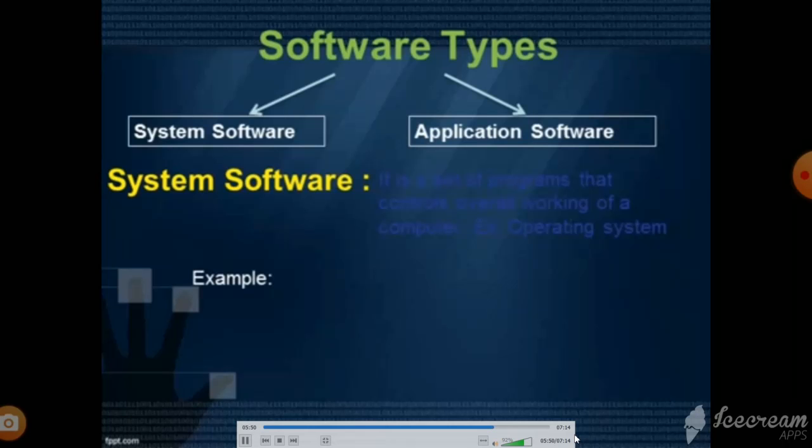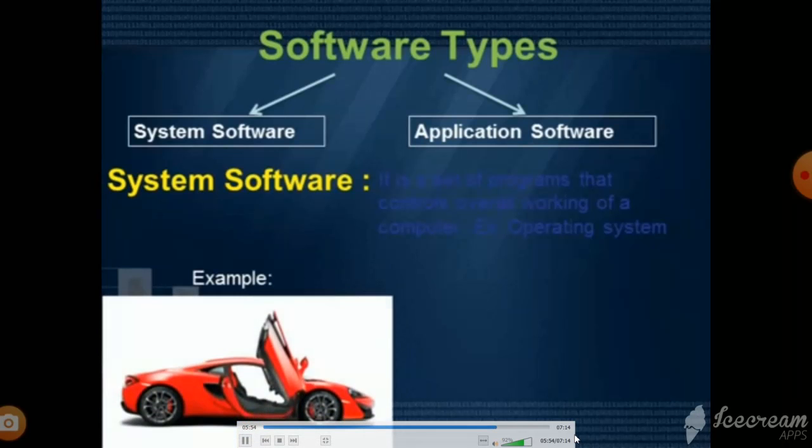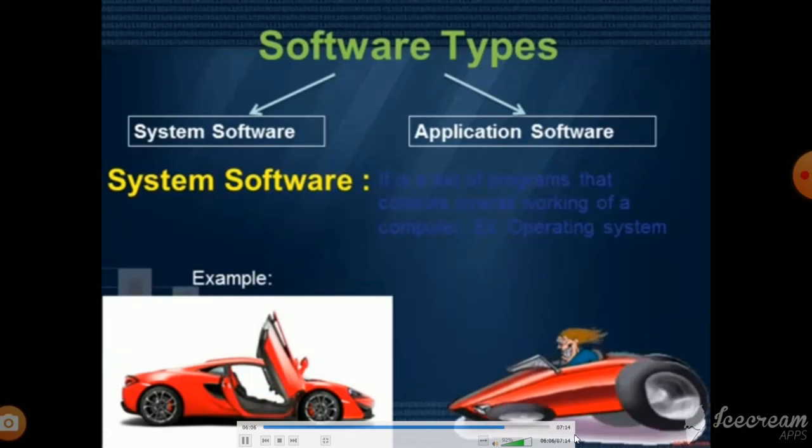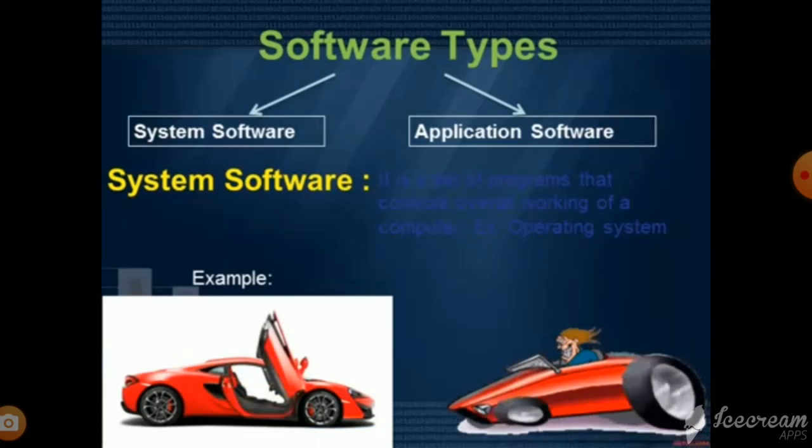Let us understand it with an example. Take the case of a car. It has petrol, engine, and wheels. When will the car move? It will move only when the driver starts it. So, the driver is the operator of a car. Similarly, operating system is the driver of a computer which makes it run. Without operating system, the computer cannot work on its own.